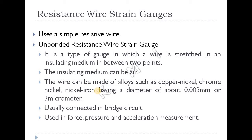Unbonded resistant wire strain gauge — 'unbonded' means not directly attached to an object. If you are attached to an object, you are bonded. Unbonded wire strain gauge is not directly attached. It is a type of strain gauge in which a wire is stretched in an insulating medium between two points. The insulating medium can be air.